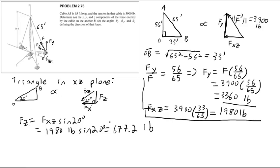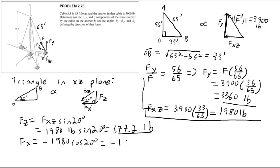And f_x is negative because it points in the negative x direction: f_x = −1980 × cos(20°) = −1860.6 pounds. So the three components are: f_x = −1861 lbs, f_y = 3360 lbs, f_z = 677.2 lbs.